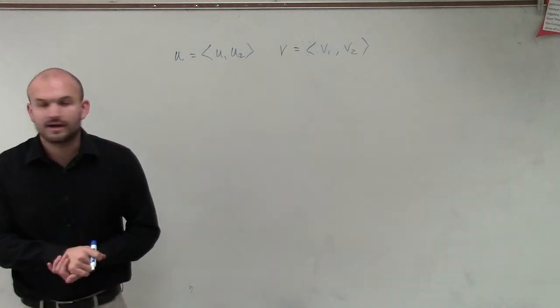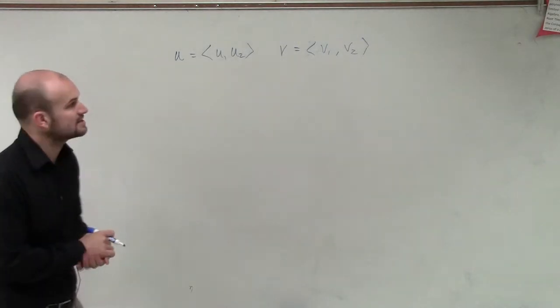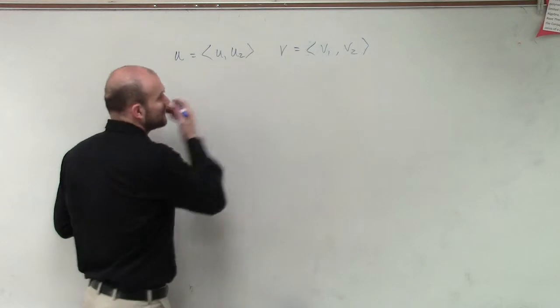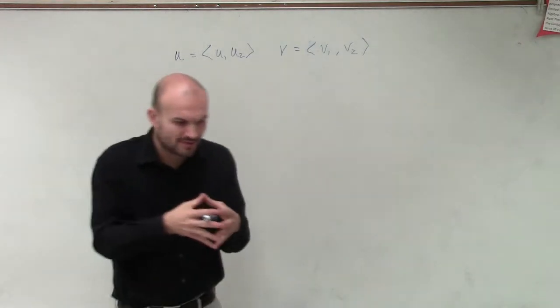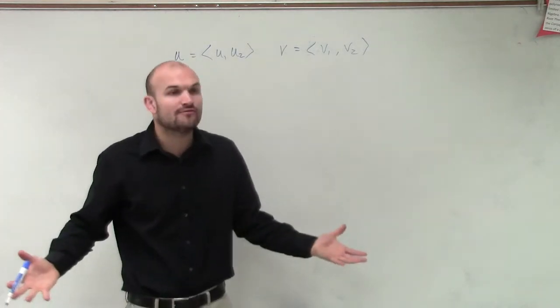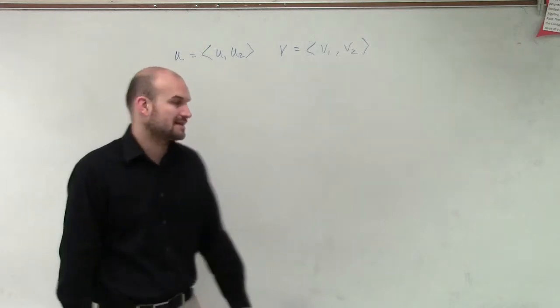So if we had two vectors, what I want to show is: we know how to find the component form and the magnitude.